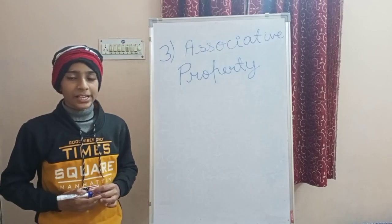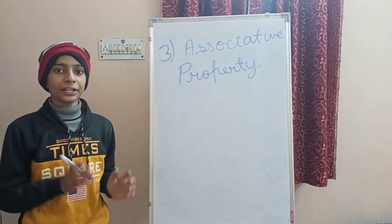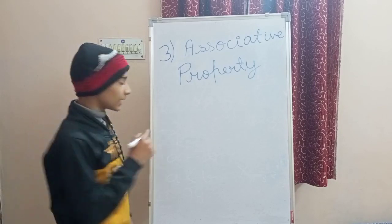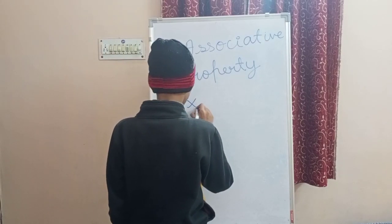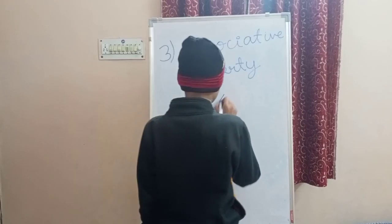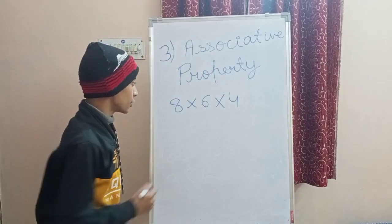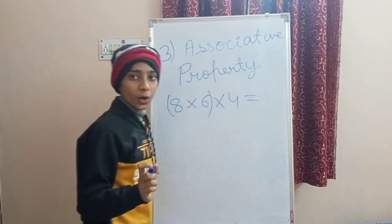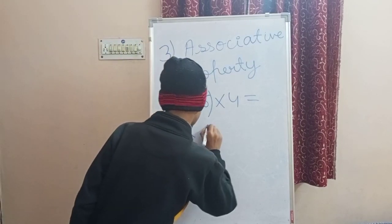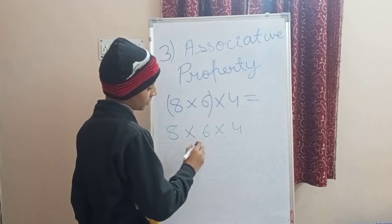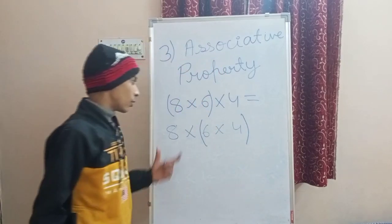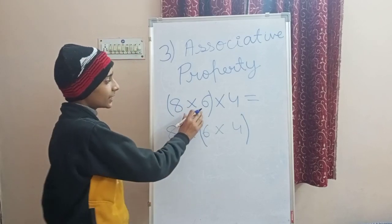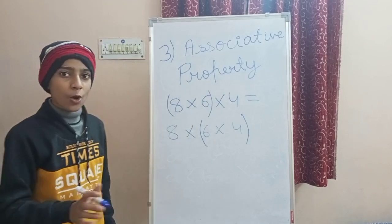Associative property means that A into B into C will always be equal to A into B into C, with different groupings. Taking A as 8, B as 6, and C as 4: first we put 8 into 6 in brackets. So 8 into 6 is 48, and 48 into 4 is 192.